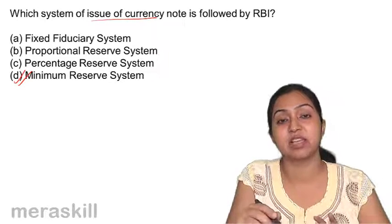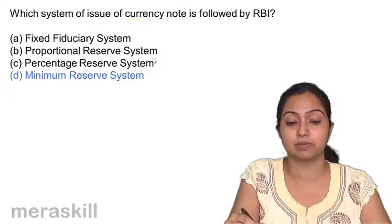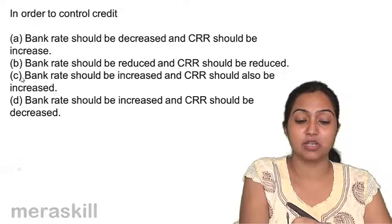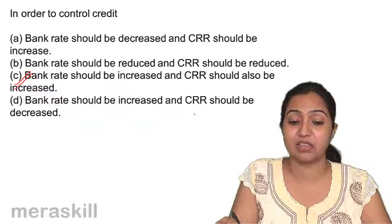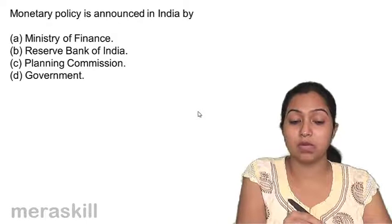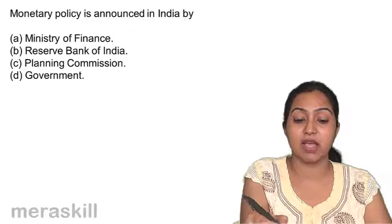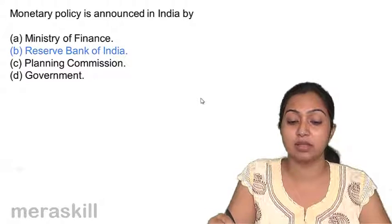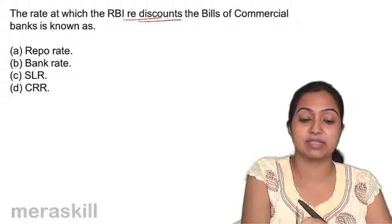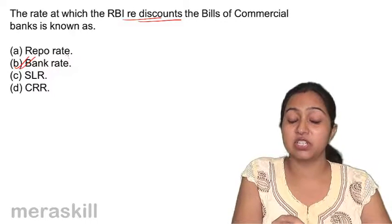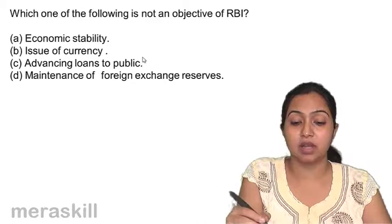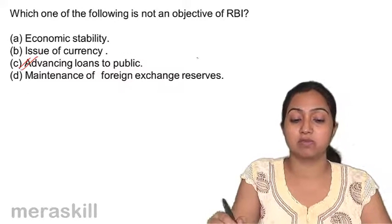In order to control credit, bank rate should be increased and CRR should also be increased — when we increase both, we control credit. Monetary policy is announced by the Reserve Bank of India, while fiscal policy is announced by the Government of India. The rate at which RBI rediscounts the bills of commercial banks is the bank rate; the rate at which it repurchases securities is the repo rate.